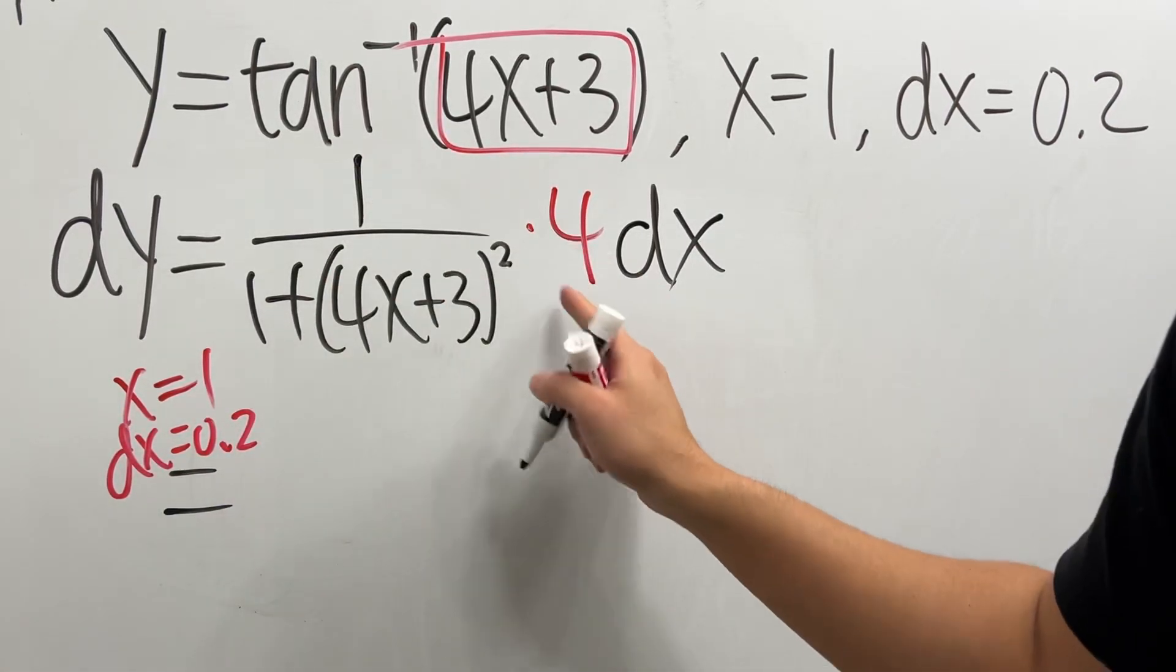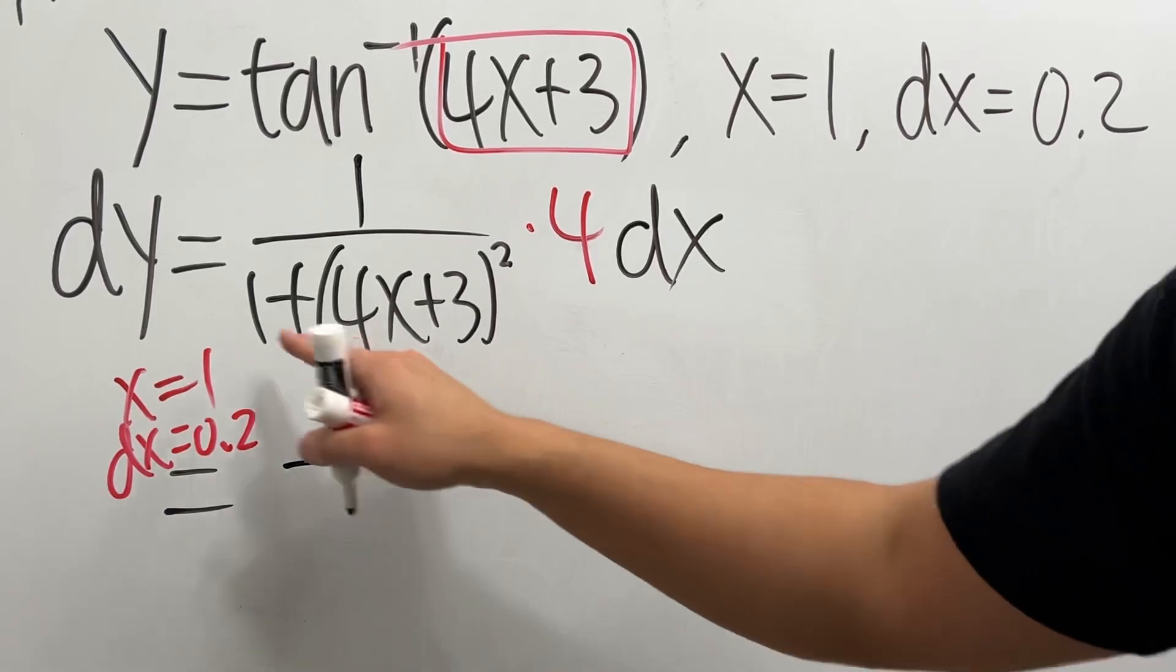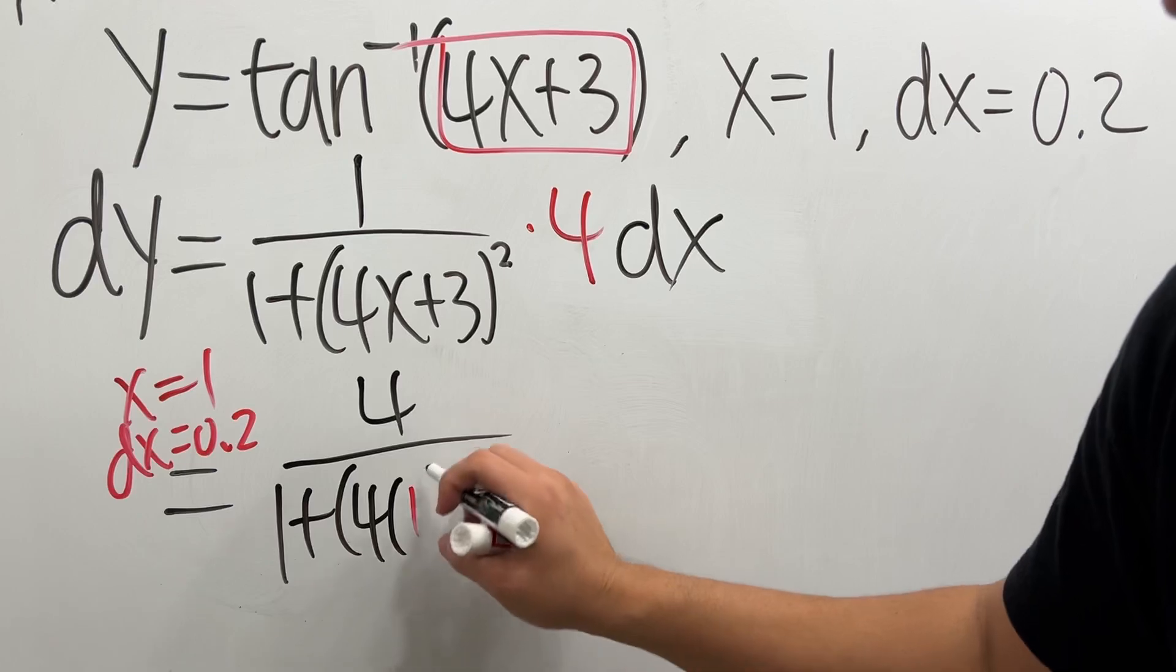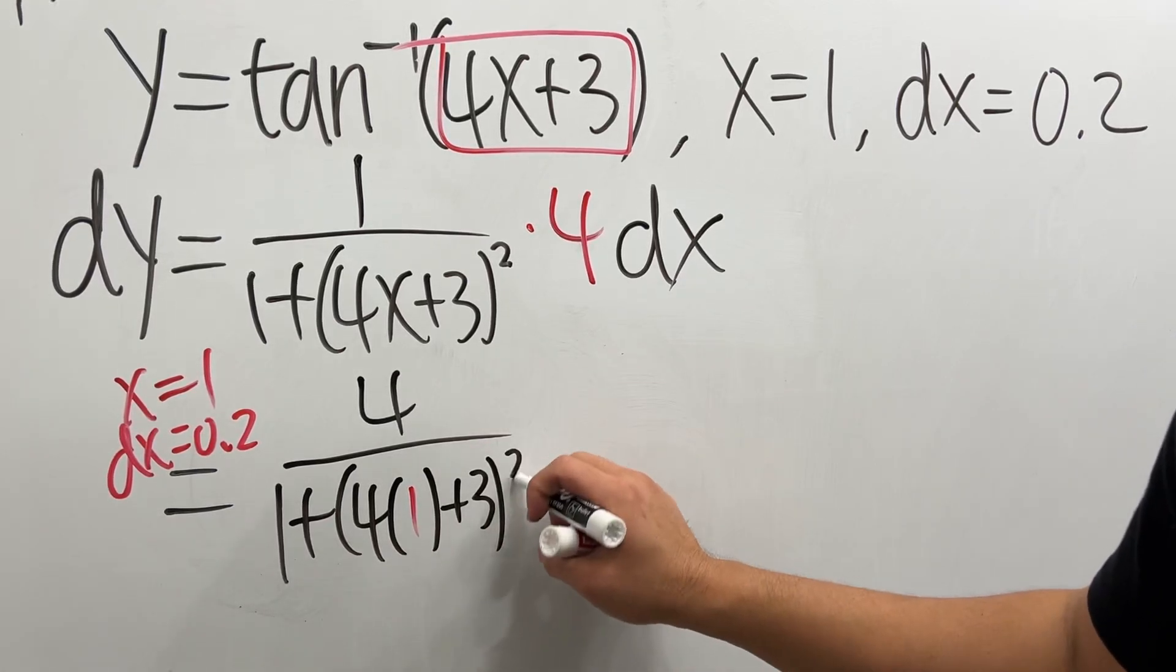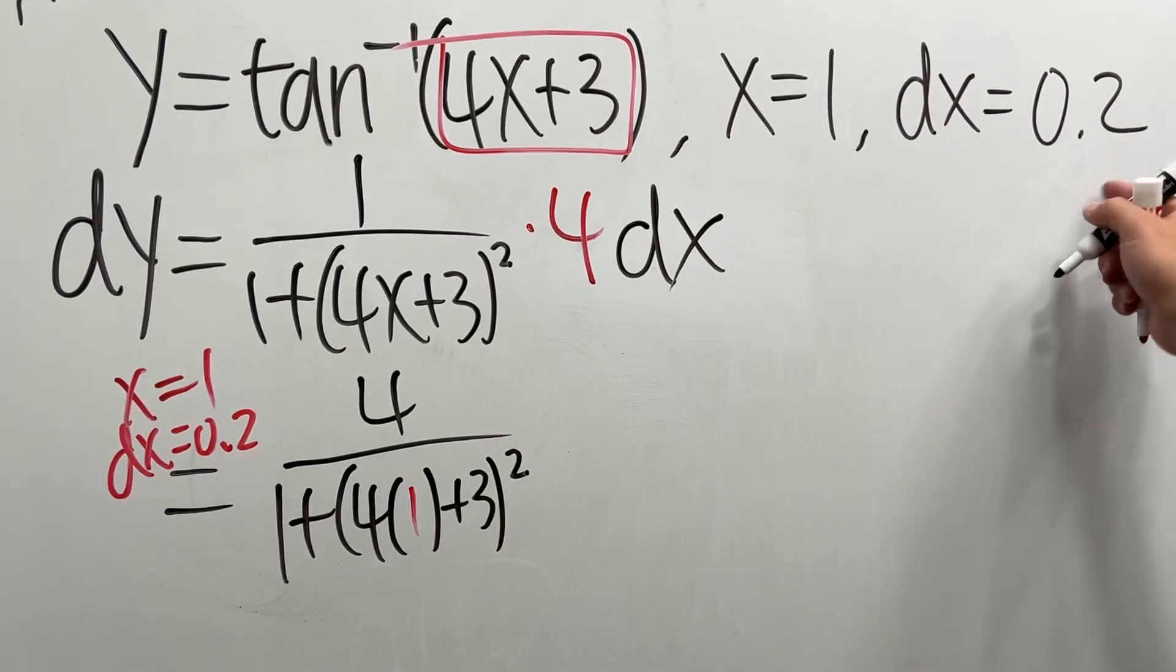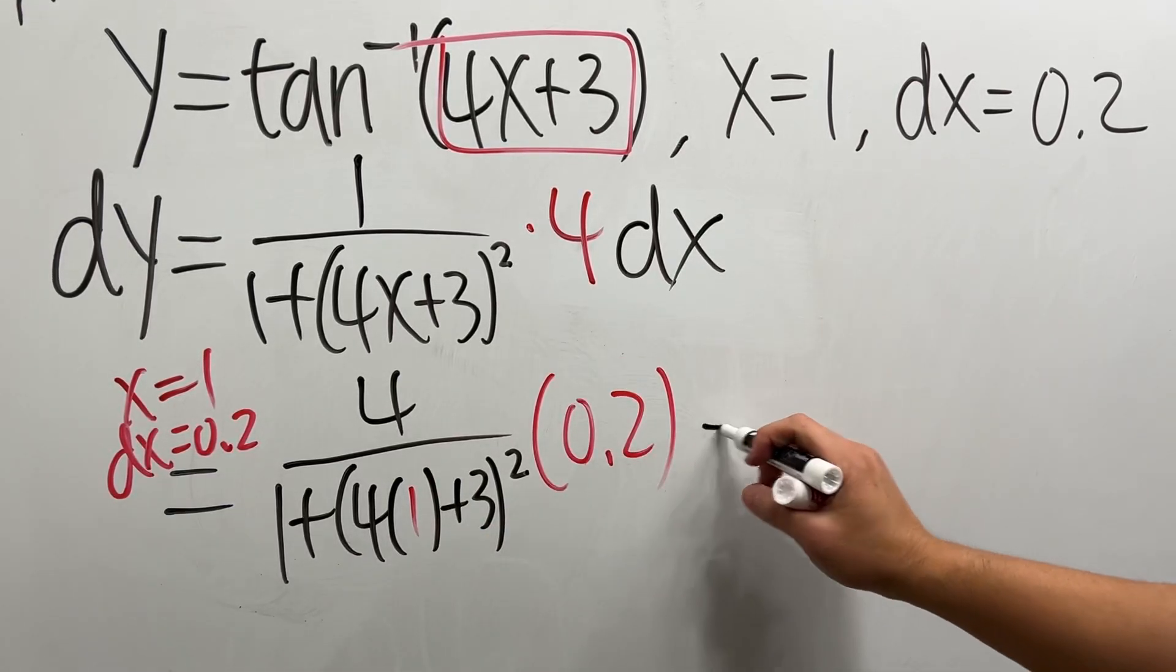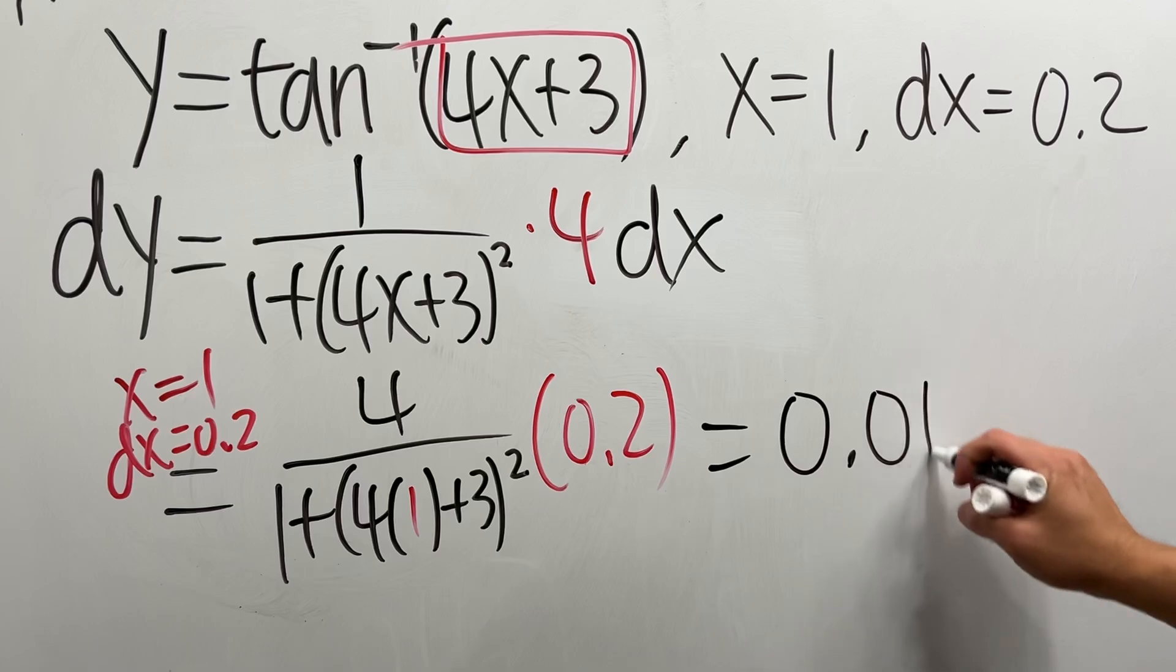So 1 times 4 right here is 4 over 1 plus parentheses 4 times 1, and then plus 3, and then squared, and the dx is 0.2. Work that out, you will get 0.016.